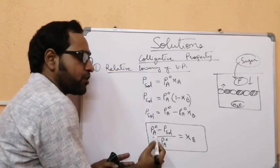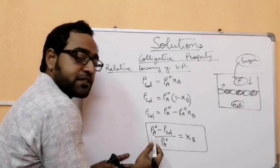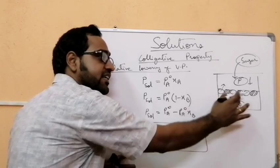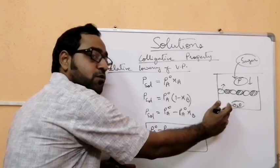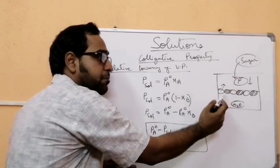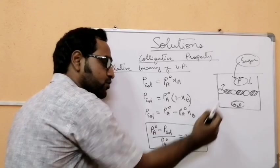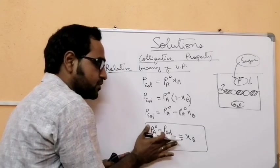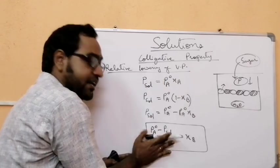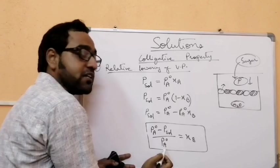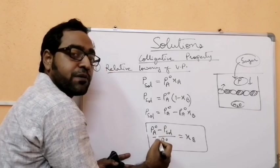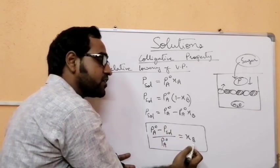Here, P_A° is the vapor pressure of the pure liquid — when there is no solute, the entire surface is water so vapor pressure is higher. P_solution is lower because a part of the surface is blocked by the solute. So (P_A° − P_solution) is the lowering of vapor pressure, and dividing by P_A° gives the relative lowering of vapor pressure, which equals the mole fraction of the solute.